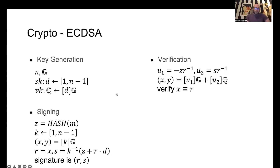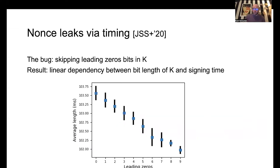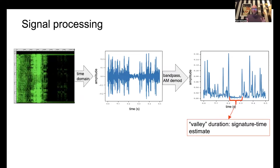We exploit a vulnerability in the ECDSA implementation. ECDSA has three components: key generation, signing, and verification. The signing operation has a scalar point multiplication where the scalar — the nonce — is supposed to be kept secret and has a constant-time implementation. But as Minerva found, this constant-time implementation is buggy: one of the loops implementing the multiplication skips leading zeros in the nonce. This results in a linear dependency between the bit length of the nonce and the signing time.